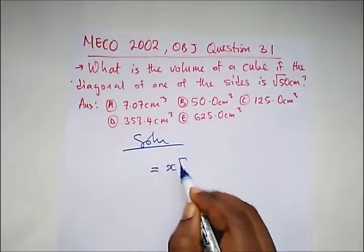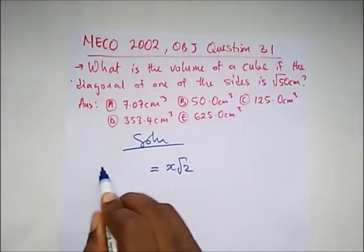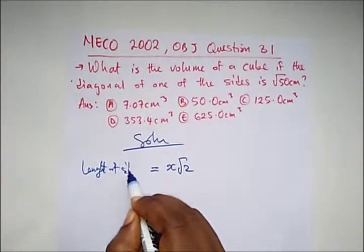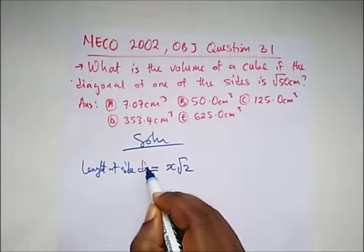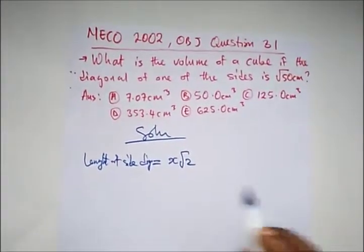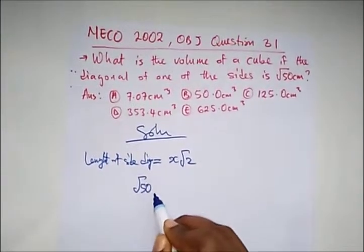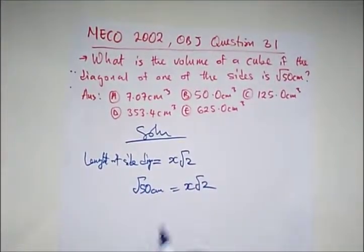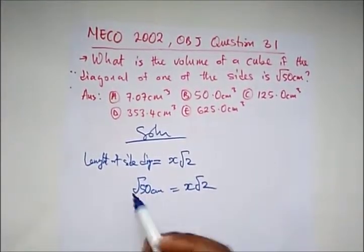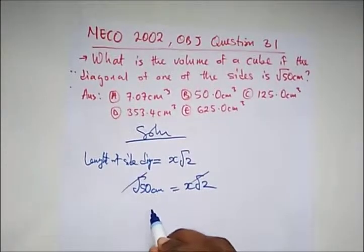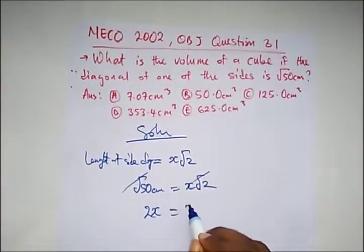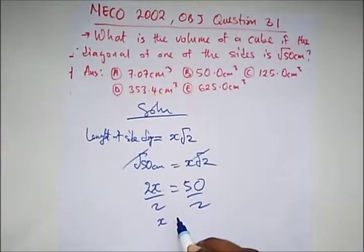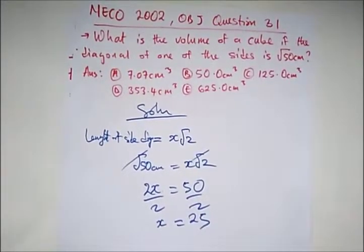So here we know from our question √50 cm equals x√2. All we need to do is cancel out this √2. We are left with 2x equal to 50. Divide both sides by 2, and we have x equals 25. Our question says what is the volume of that cube?